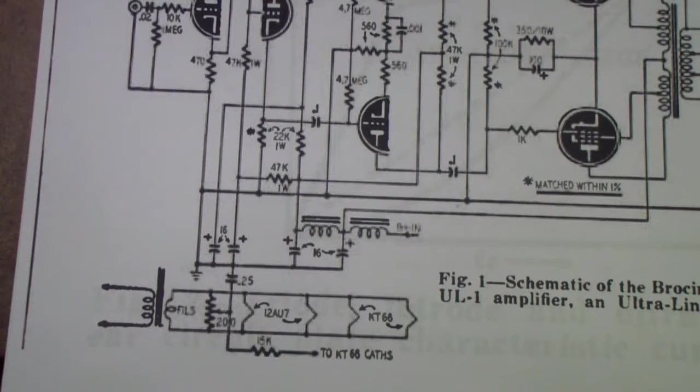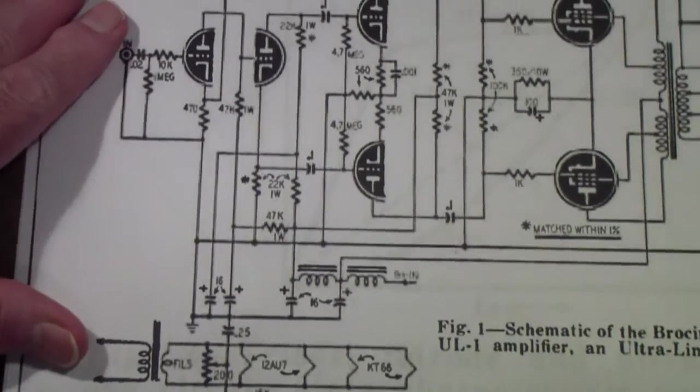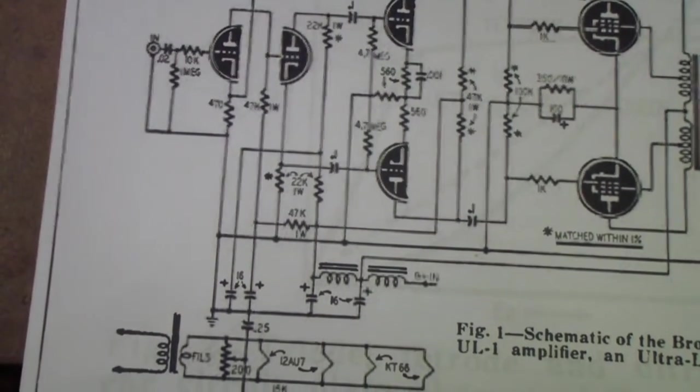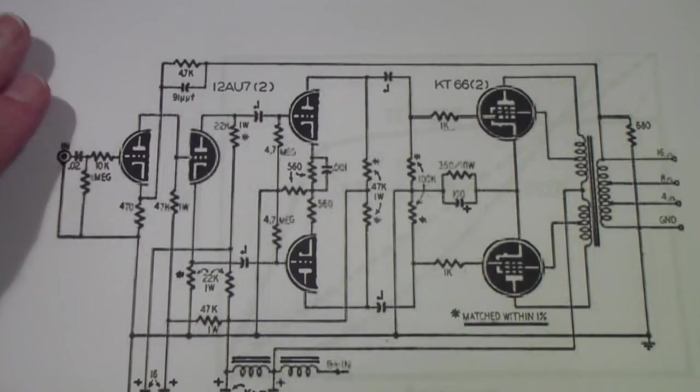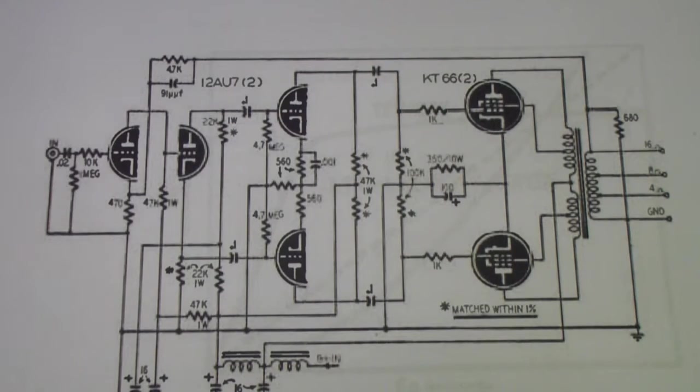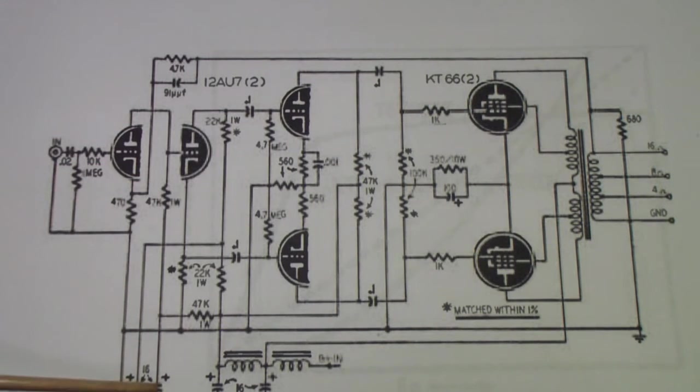The second thing that I failed to talk about is I mentioned that there were some changes that people made to the characteristics of some of these amplifiers to take care of high-frequency oscillation. One way is by using a resistor-capacitor combination on this direct coupling. Remember this tube is direct coupled to that tube in the Williamson.